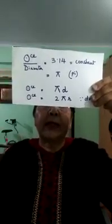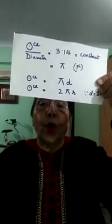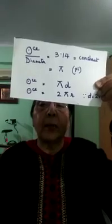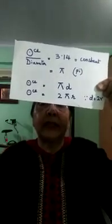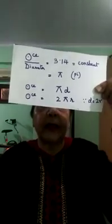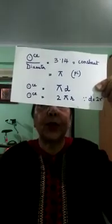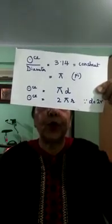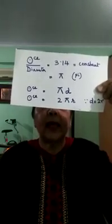If I take the diameter to the other side, I can write it as: circumference is equal to the constant times D. This constant we write as the Greek letter pi, representing the English letter P. So circumference is equal to π times D. Since the diameter is equal to 2 times the radius, if I write 2 times radius in place of diameter, I get circumference equals 2πR. Pi is a constant quantity — it does not change.